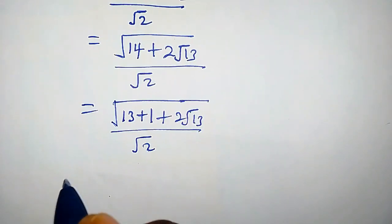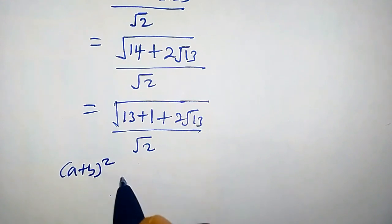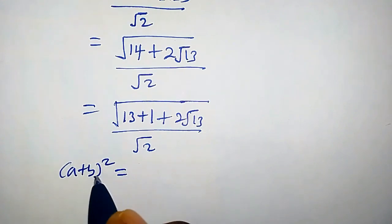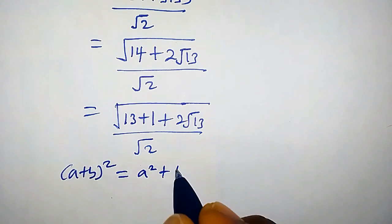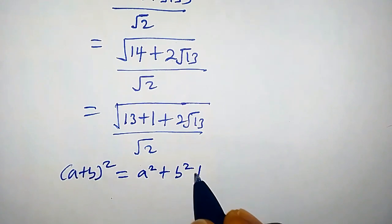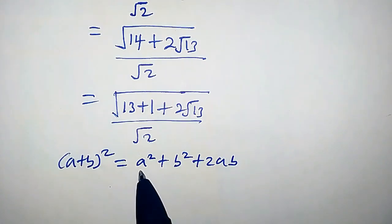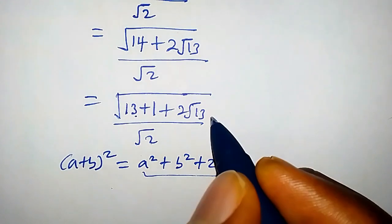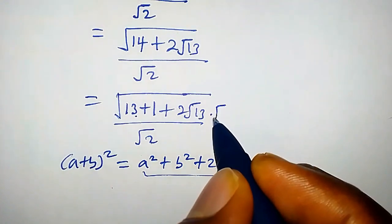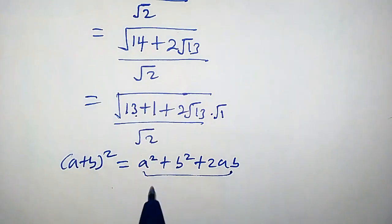Now suppose we have (a + b) all squared — expanding this we get a² + b² + 2ab. We're going to compare this right-hand side with our numerator expression. We'll place √1 in the expression since nothing has changed.